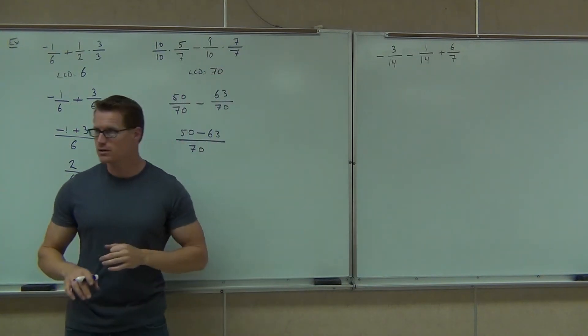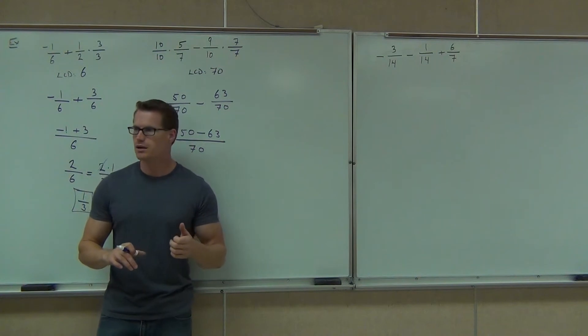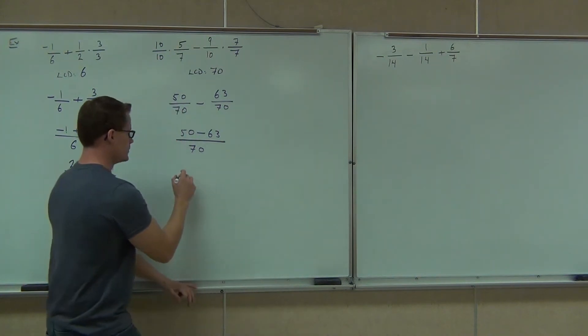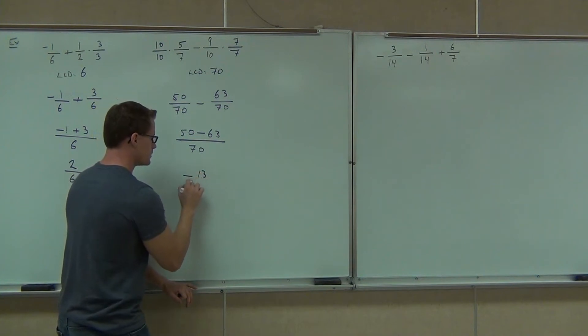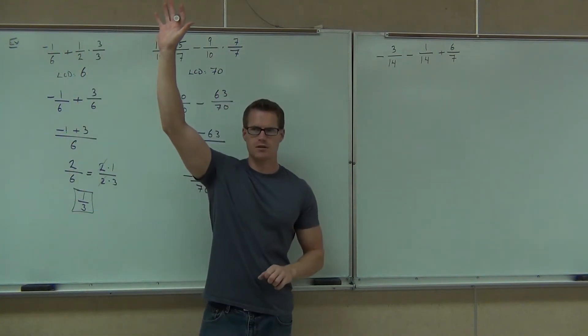Don't give me positive 13. Don't give me something like that. Certainly don't give me something like 113. Give me the correct answer. Negative 13 over 70. Good. How many people got negative 13 over 70? Good for you. That's fantastic.